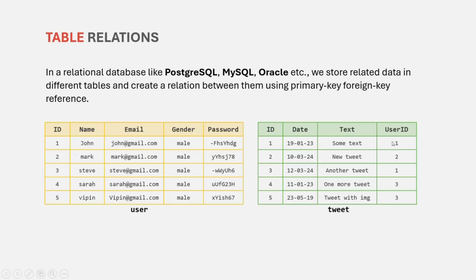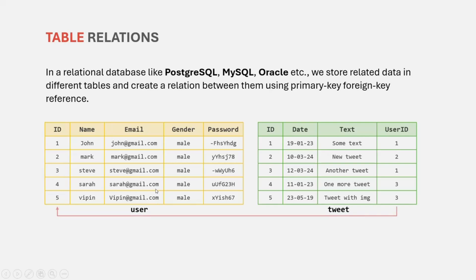If you go to the user table, the user with user ID 1 is John. So here, instead of storing the tweet data and the user data in the same table, we have two different tables — one table for user, one table for tweet. The tweet table stores a reference to rows from the user table in the user ID column. Basically, when we say user ID 1, that means this tweet was made by the user with user ID 1, and that user is John. So we have a relation between the tweet table and user table. The user ID is the foreign key of the tweet table, which is storing the primary key of the user table.